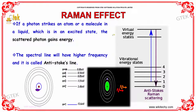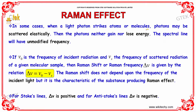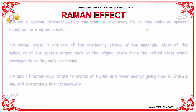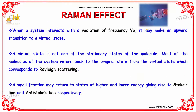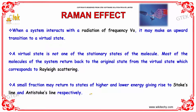This is your ground state moving towards the virtual energy states. A small fraction may return to states of higher and lower energy, giving rise to the Stokes and anti-Stokes lines respectively.